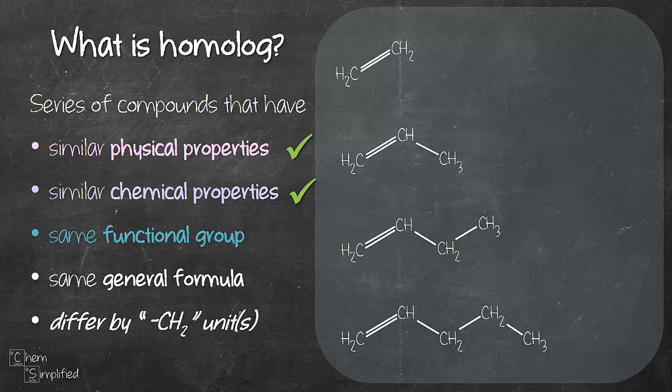The next point is same functional groups. Notice these four compounds have a similar functional group which is C-C double bond and that happens between the first and the second carbons. So that is an alkene. If you need a refresher on the functional groups, I will post the link to the top right of this video.